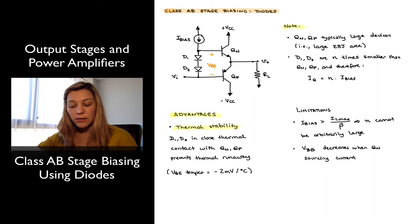In order to take advantage of it, we will need to have D1 and D2 placed in close thermal contact to the output transistors, which in IC design is easy to do. They will just need to be placed in close proximity to the output transistors. In discrete circuit design, they oftentimes will be mounted on the metal case of transistors Qn and Qp.